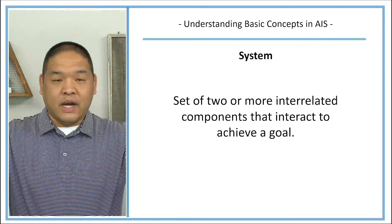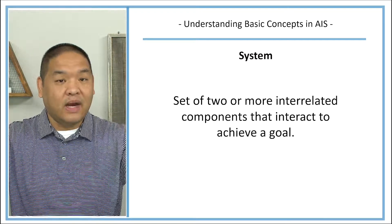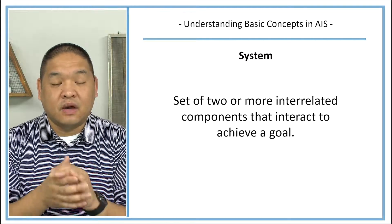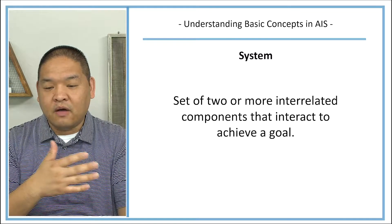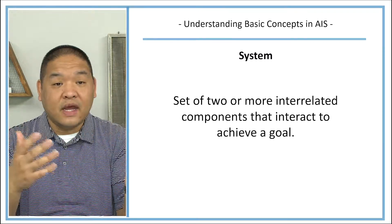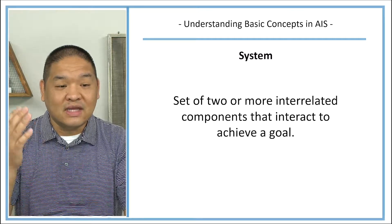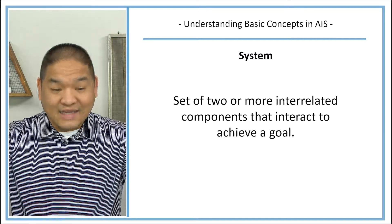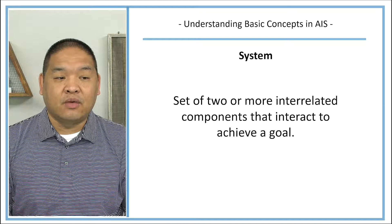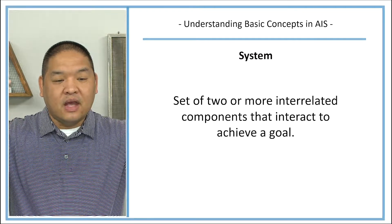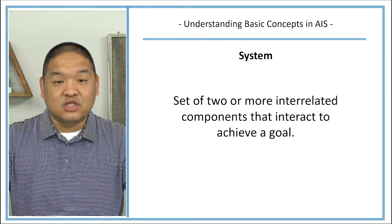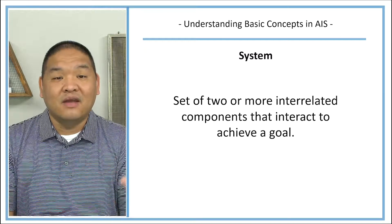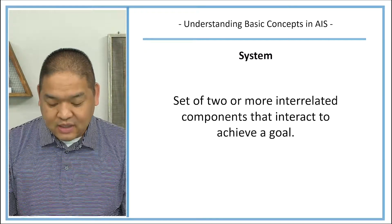A system is a set of two or more interrelated components that interact to achieve a goal. They can really be whatever — two interrelated whatevers working toward the same goal. For instance, if you've played on a soccer team and two players are passing the ball to each other, they're interrelated because they're on the same team and striving for the same goal: getting the ball into the opponent's net, or broadly speaking, winning the match. That would technically be a system.